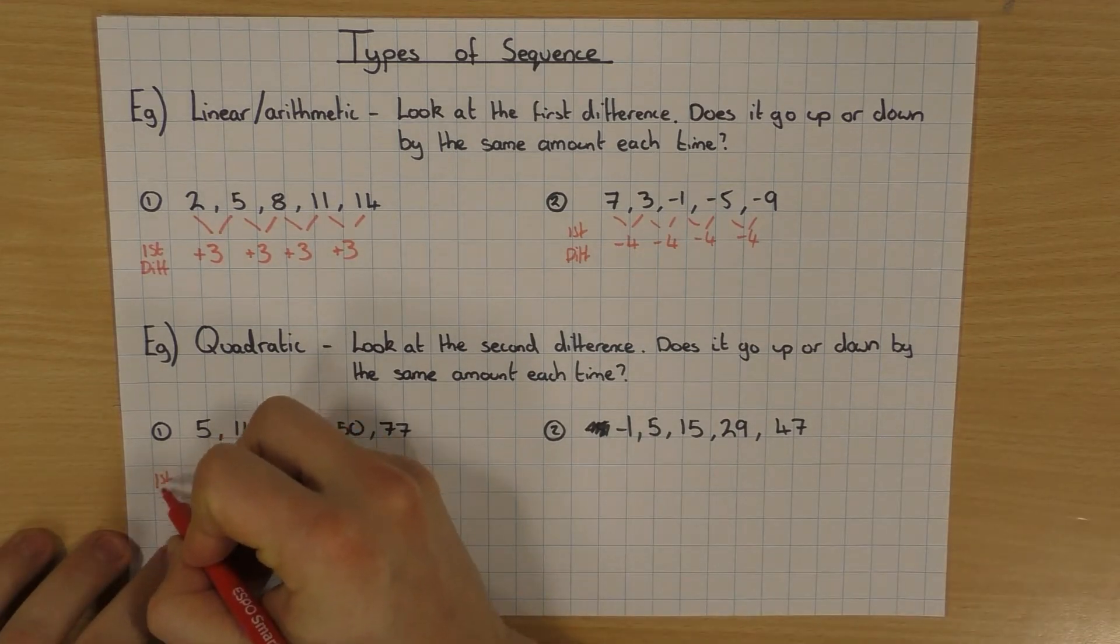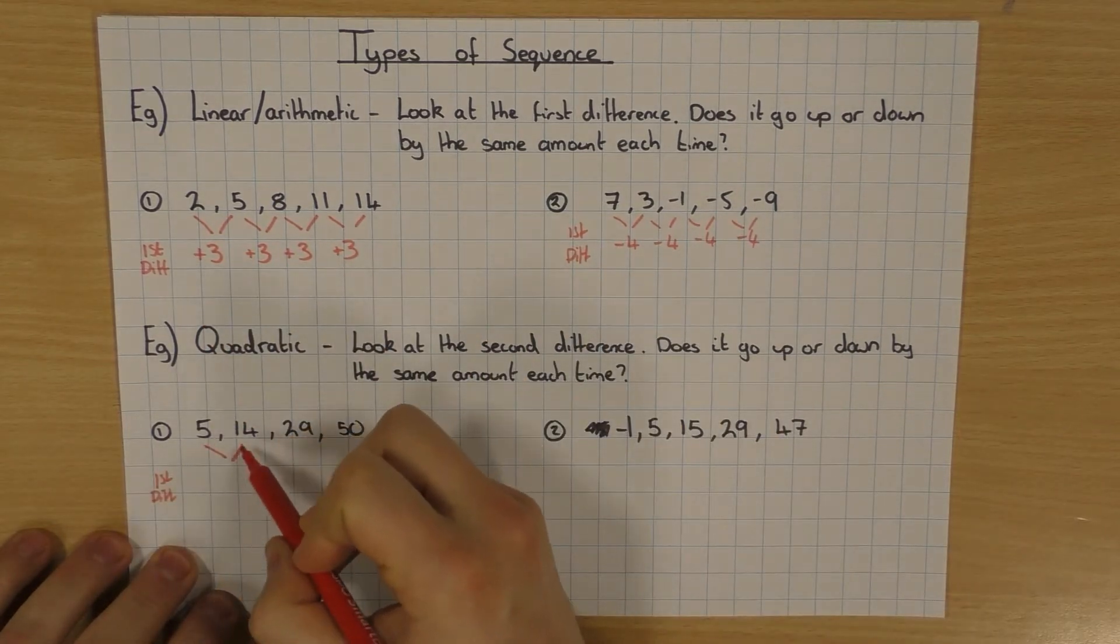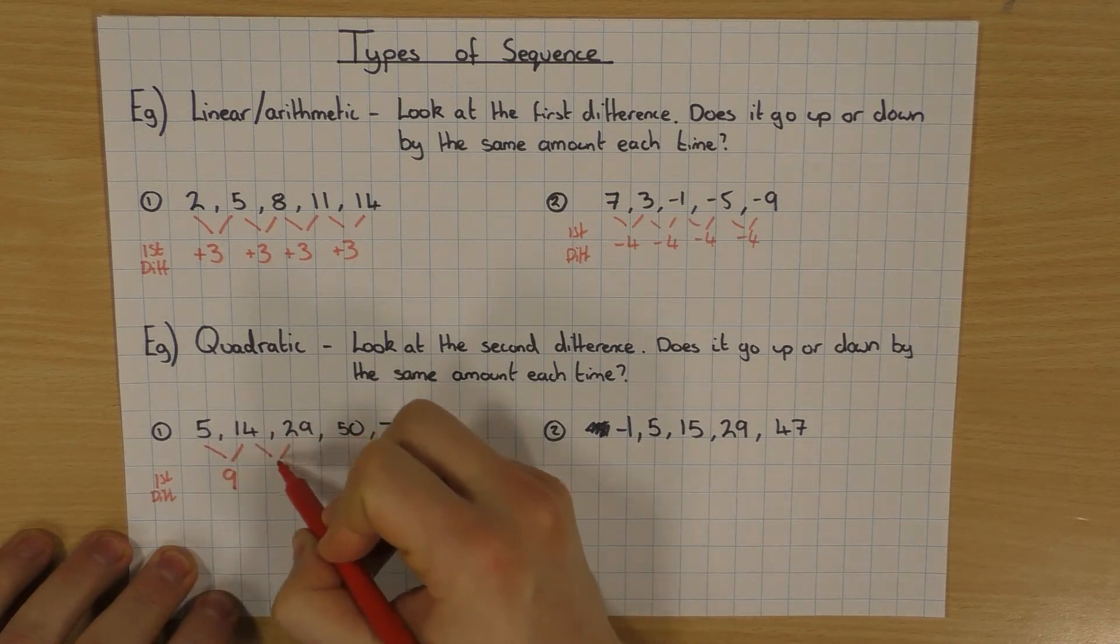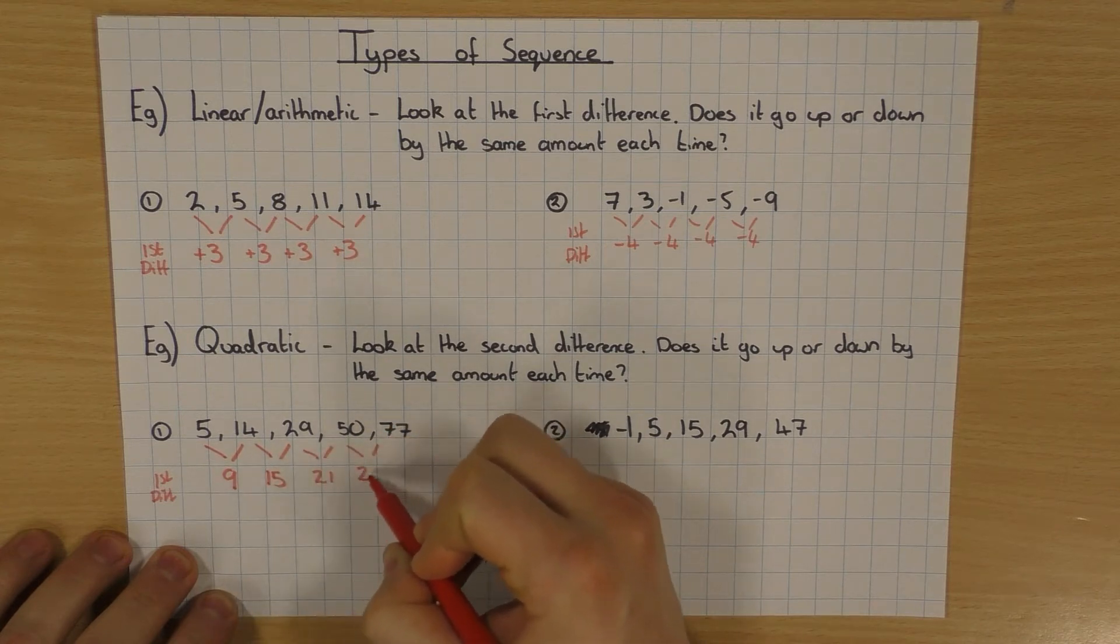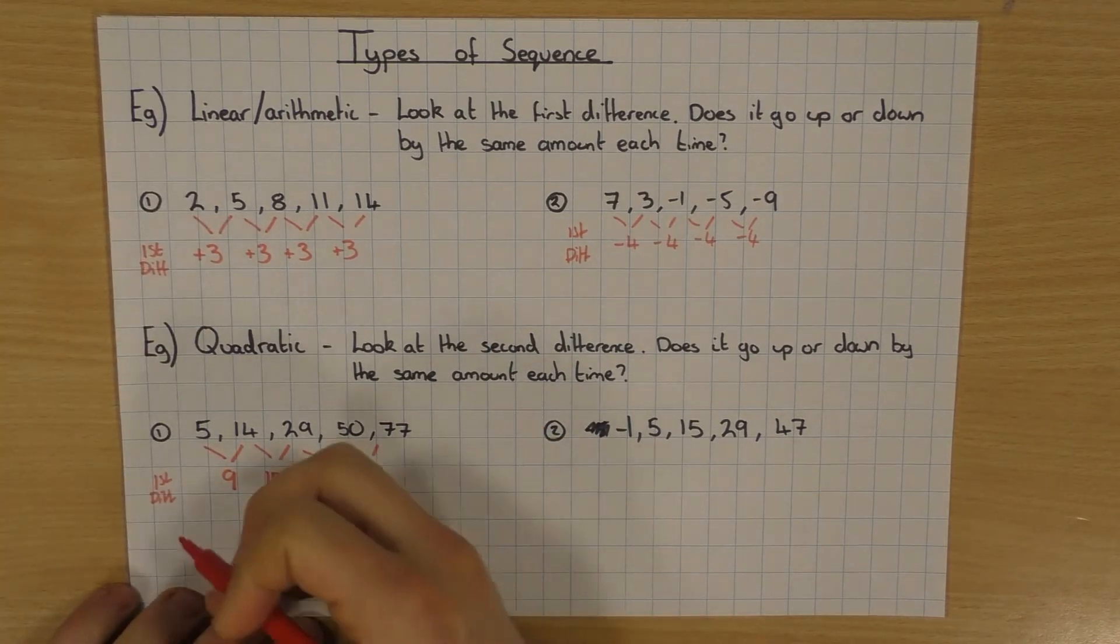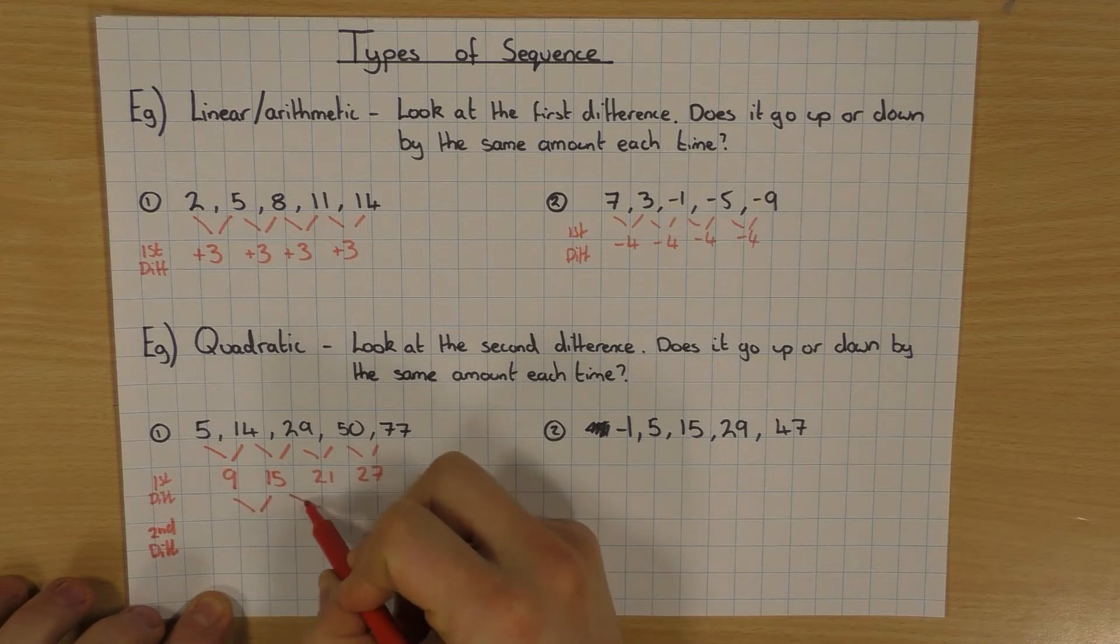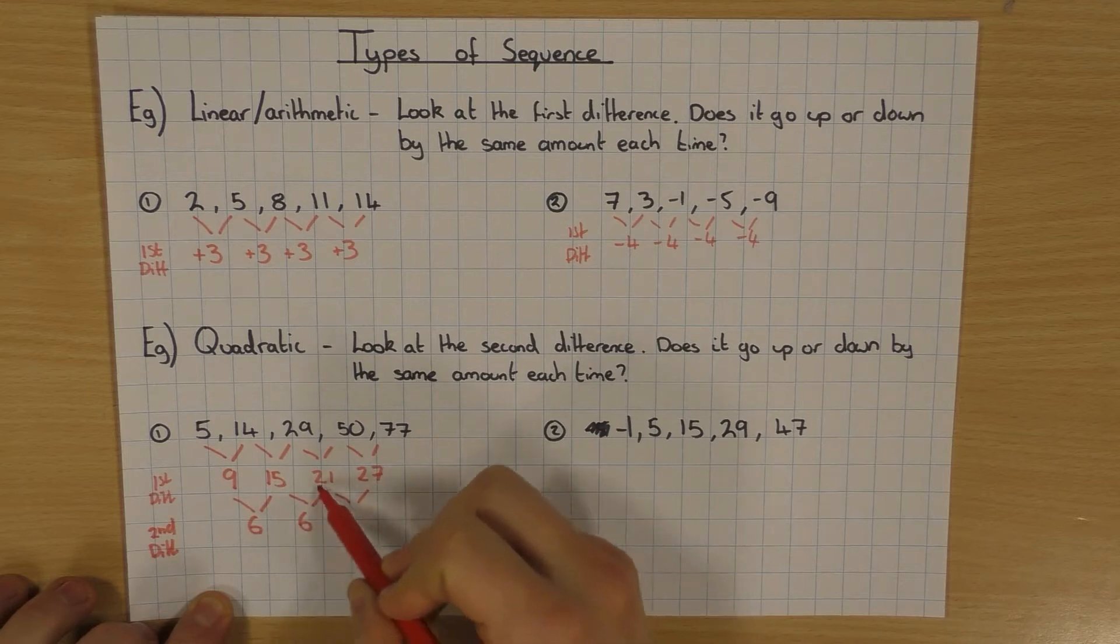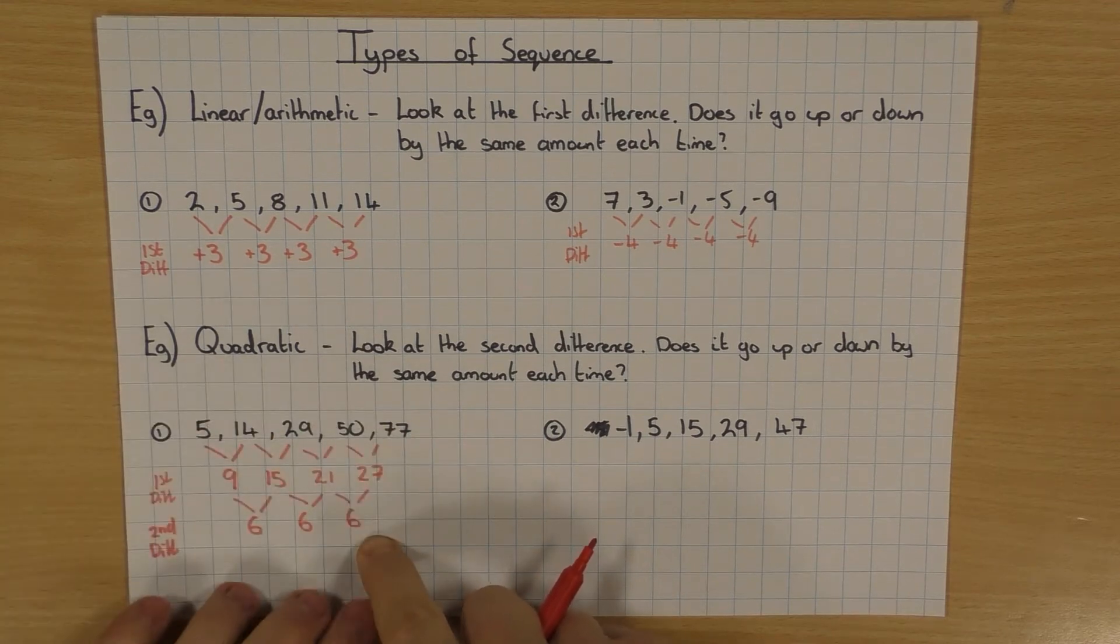So the first thing I'm going to do is work out the first difference, just like I did in these ones here. The difference between 5 and 14 is 9. And between 14 and 29 is 15. Then 21 and 27. So quite clearly, this isn't a linear sequence because these are all different. However, if we have a look at the second difference, the difference between these guys. 9 and 15 is 6. 15 and 21 is 6. And 21 and 27 is 6. So because the second difference is the same, this sequence here is going to be a quadratic.